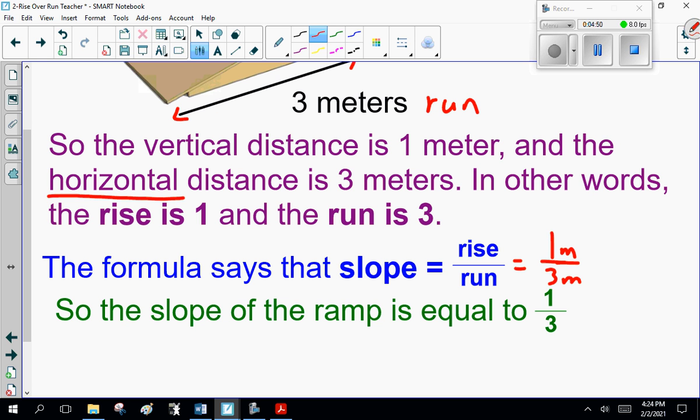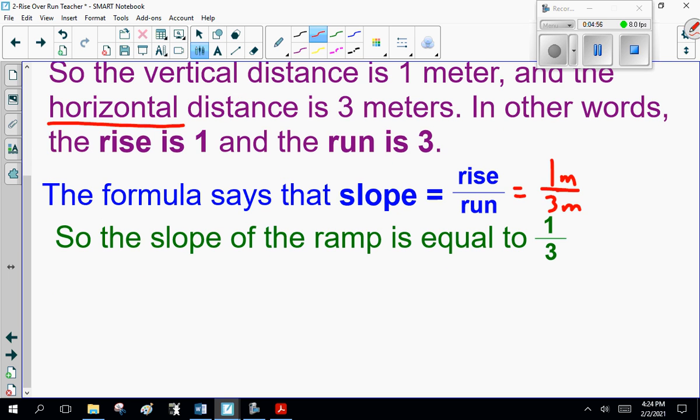The formula says that slope equals rise over run. So we plug that in. The rise is 1 meter, the run is 3 meters. So the slope of the ramp is equal to 1/3. One third. Notice the units cancel out because they're the same. If you grab your calculator and go 1 divided by 3, it should give you 7 or 8 decimal places. I will write that out to 0.3 repeating. Or, more often, I will go to 3 decimal places. You can go 0.3 with the little line above means 0.3 repeating, or you go 0.333, which, honestly, is close enough.